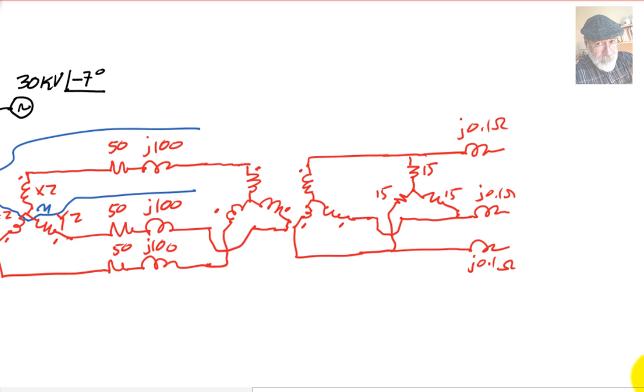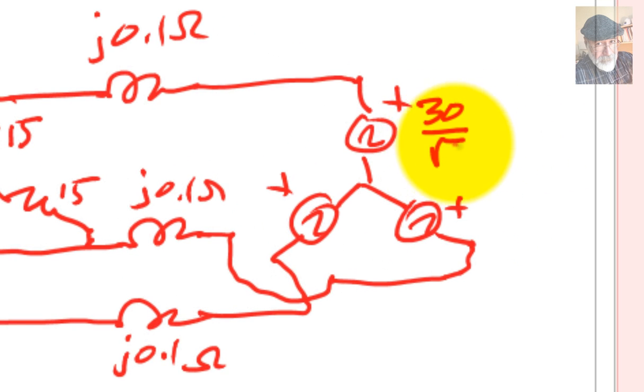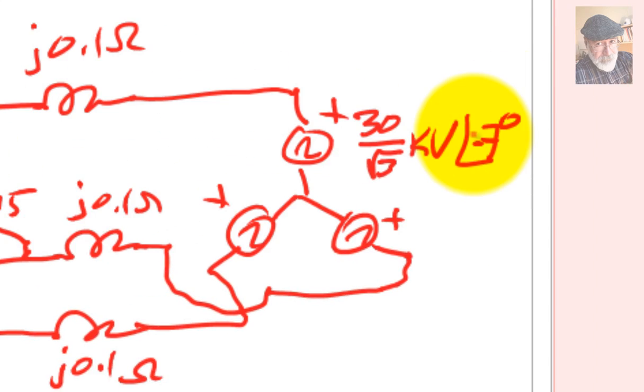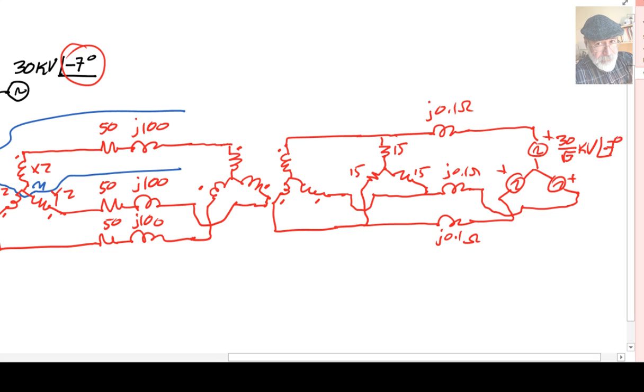And then the generator is this one. And that is 30 kV. That is line to line. That is the voltage between this point and that point. So that means this is 30 divided by root 3 kV. And the phase A of that generator has a phase of negative 7 degrees. And that is the system we need to solve. But in reality, we are going to be working only with phase A of all of that. All of this one. That is the circuit we would be solving. And you know how to do that too. Thank you very much.